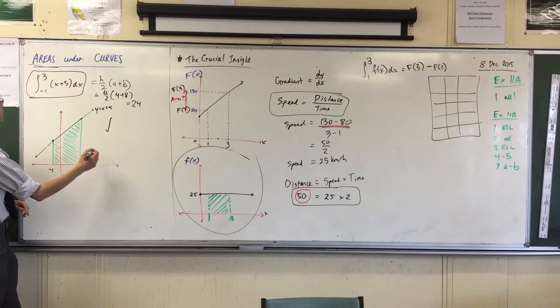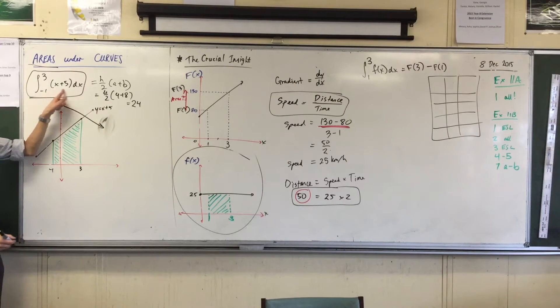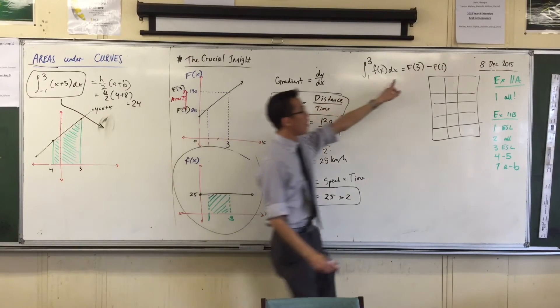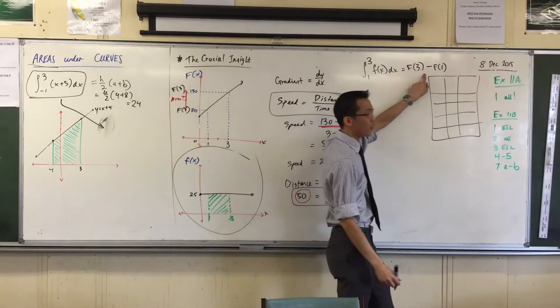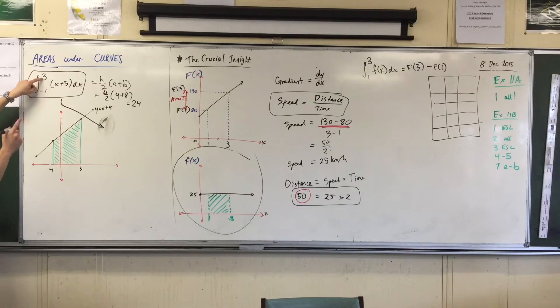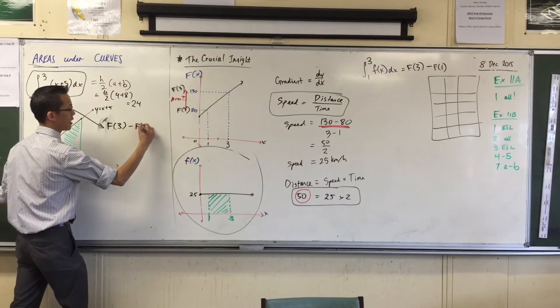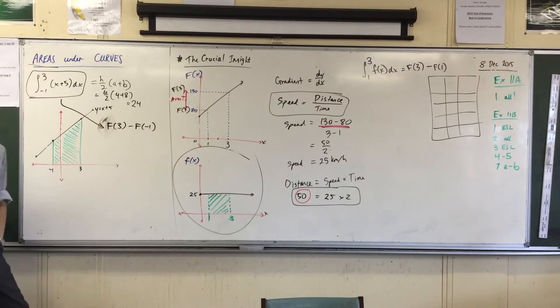This is going to be f of the upper boundary take away f of the lower boundary. Do you agree with that? Okay, so here's my upper boundary, which is conveniently the same, and here's my lower boundary. You're right with that? So what I want is this take away this. Do you agree with that? Okay, now what I need to know is, well, what's the primitive? What happens when I anti-differentiate that guy? Okay? So this is where I'm going. This is where I'm leaning, okay?